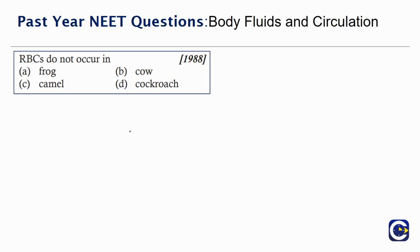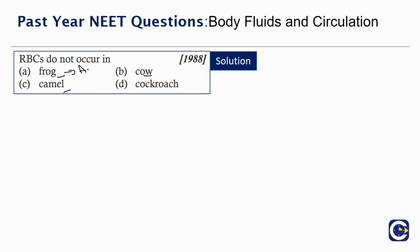These do not occur in options given are Frog, Cow, Camel, Cockroach. So let's start with the options. Frog is an Amphibian.